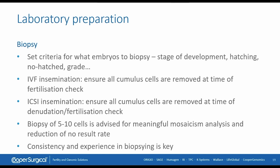We will biopsy 5 to 10 cells to have the highest meaningful mosaicism analysis and to reduce the no-result rate. We will go into detail about why we settled on that 5 to 10 cell range. Consistency and experience in biopsying is key — you need to train before you start and monitor your quality while doing this work in the lab.